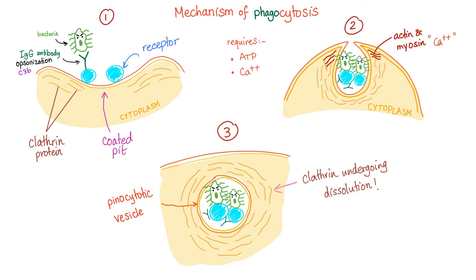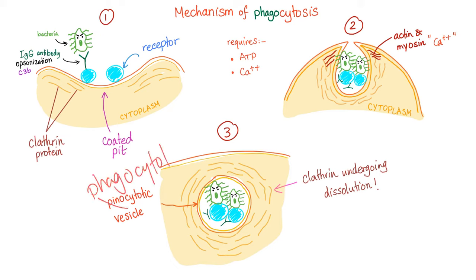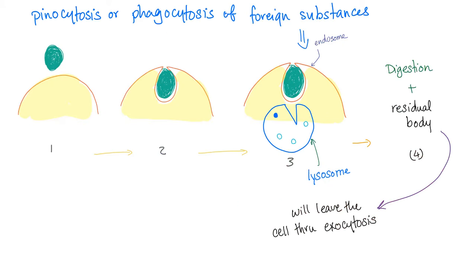The mechanism of phagocytosis is similar but involves whole cells, bacteria, or large particles. The phagocytic cell — likely a macrophage or white blood cell — uses IgG antibody and C3B through a process called opsonization. IgG and C3B are opsonins, proteins that make bacteria recognizable and 'tasty' for the white blood cell to engulf. The bacteria binds via the antibody to the receptor, then actin and myosin contract, and clathrin brings everything in, forming a phagocytotic vesicle.